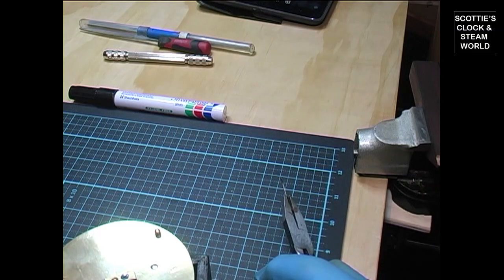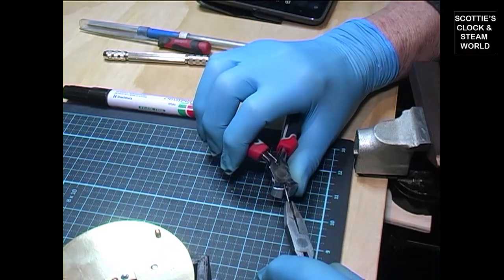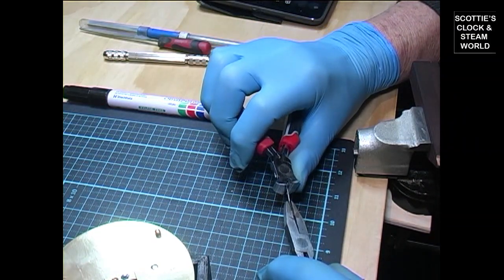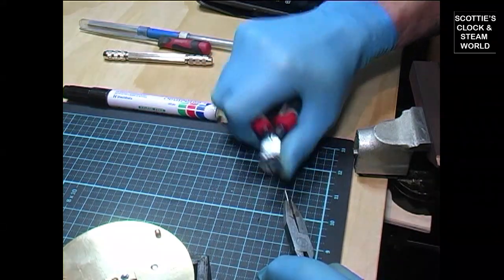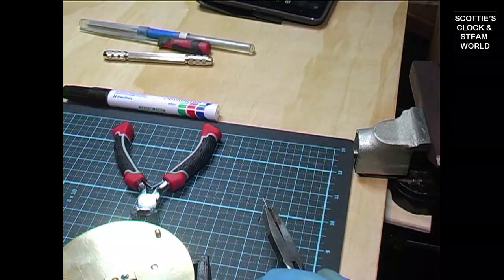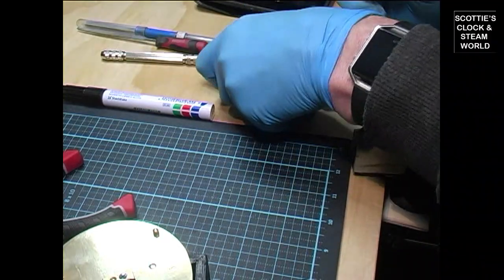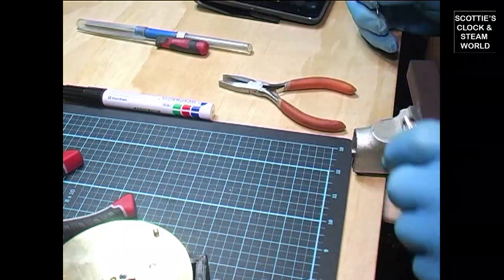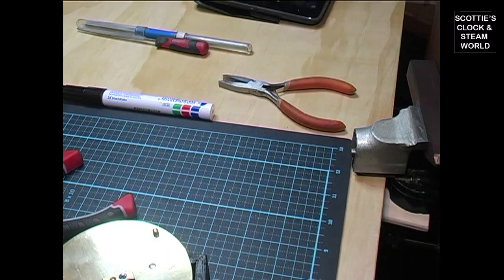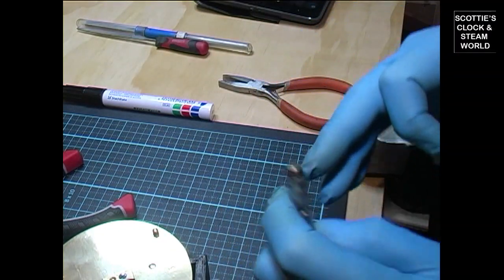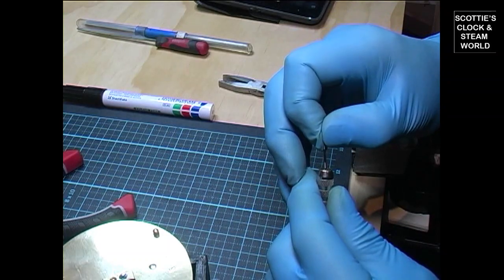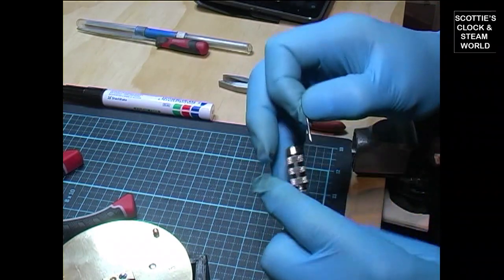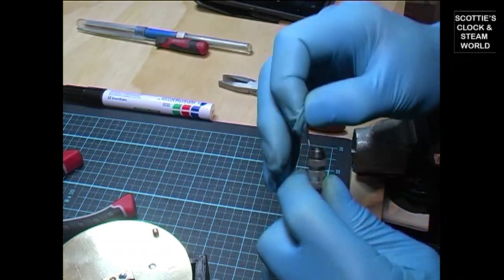Using the end cutters, cut off one end of the pin. Now insert the other end of the pin into your pin vise and tighten the pin.